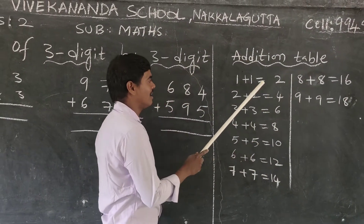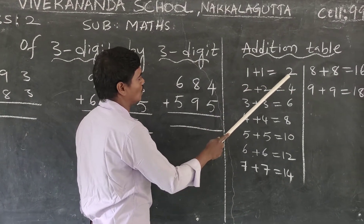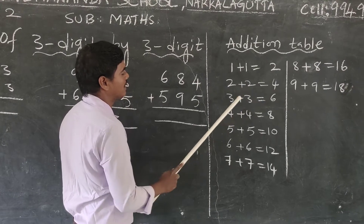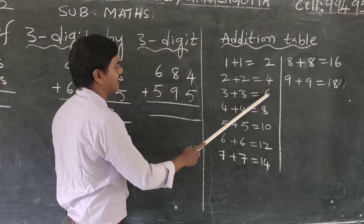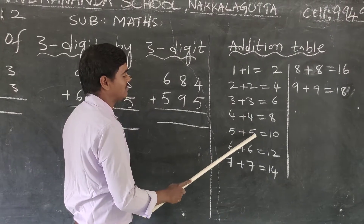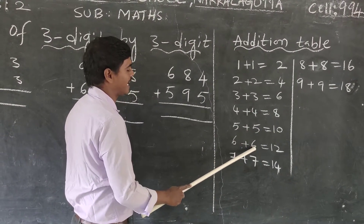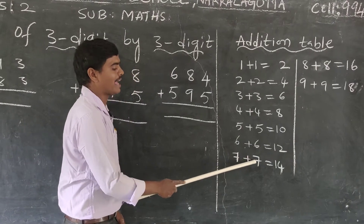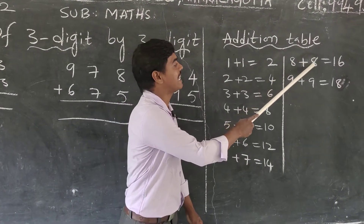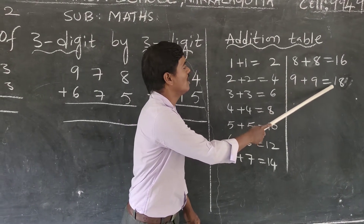Once again, listen carefully: 1+1=2, 2+2=4, 3+3=6, 4+4=8, 5+5=10, 6+6=12, 7+7=14, 8+8=16, 9+9=18.